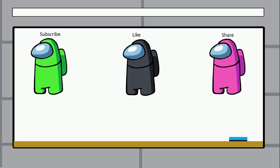Okay, let's check. Again, appears subscribe, like, and share. What do you think is the impostor right now?